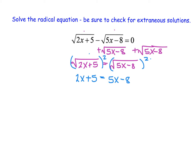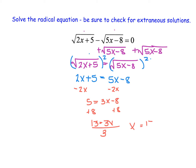Now from here, all we need to do is solve this equation. We subtract 2x from each side, add 8 to each side, giving us 13 is equal to 3x. Dividing by 3, we end up with x is equal to 13 over 3.